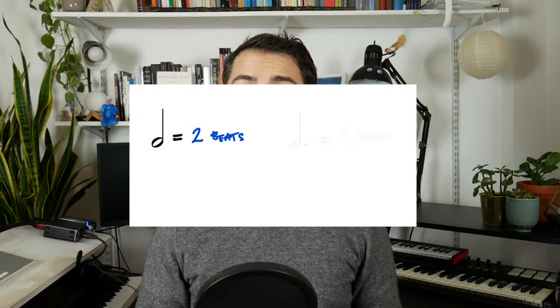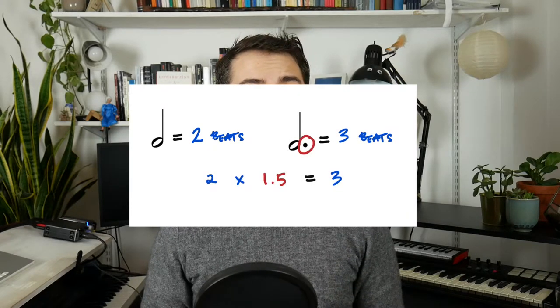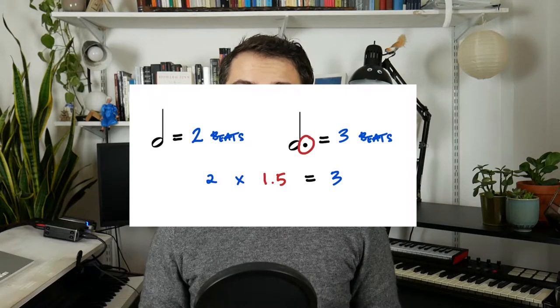Dotted notes are a special marking that affects the duration of a note in a very specific way. By placing a dot to the right of a note head, the composer is telling the performer to hold this note value for one and a half times its original length. For example, a half note lasts for two beats, but a dotted half note would last for three beats, because two beats times one and a half equals three beats.